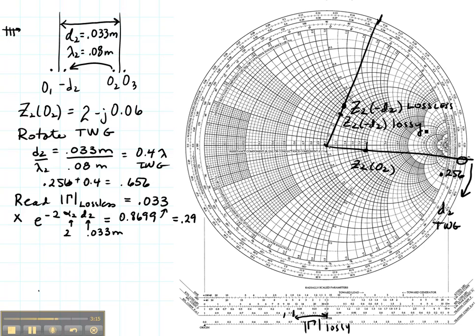Now let's read that. So I'm going to read Z2 at minus D2. The real part is about 1.1. And the imaginary part is positive and it's about 0.55. Remember, this is still normalized. So that's the value that I have for my normalized impedance right here. I want to take that across the boundary.